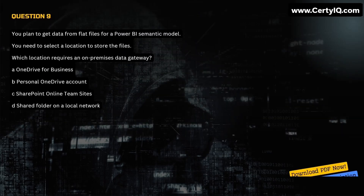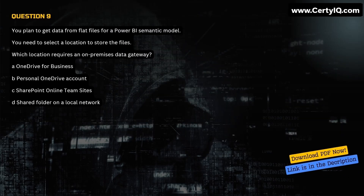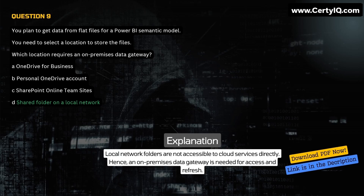Question 9. You plan to get data from flat files for a Power BI semantic model. You need to select a location to store the files. Which location requires an on-premises data gateway? A. OneDrive for Business. B. Personal OneDrive account. C. SharePoint Online team sites. D. Shared folder on a local network. Correct answer is D. Explanation: Local network folders are not accessible to cloud services directly. Hence, an on-premises data gateway is needed for access and refresh.